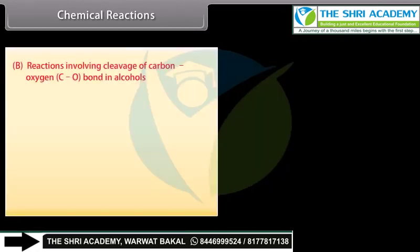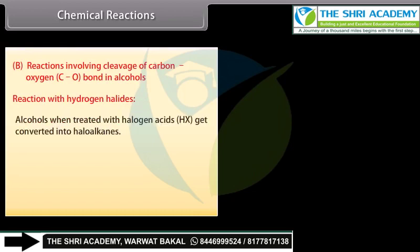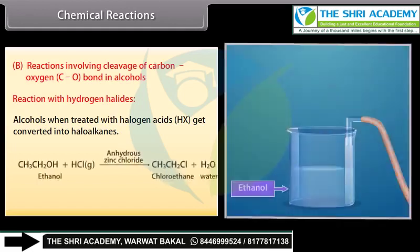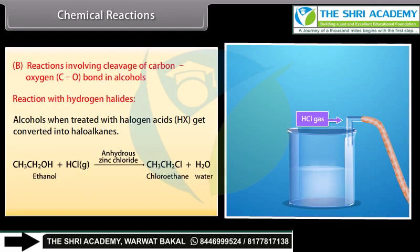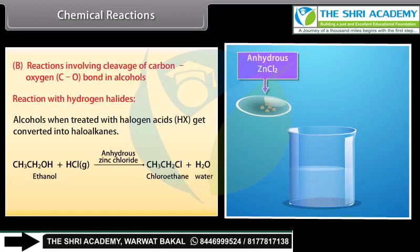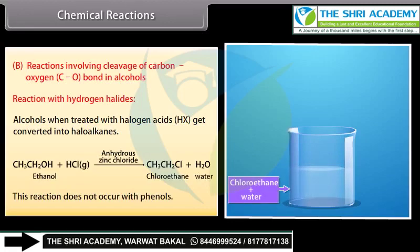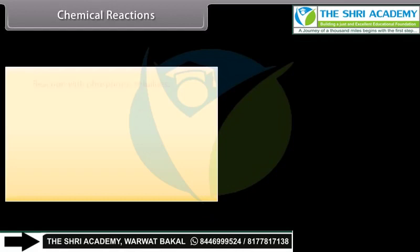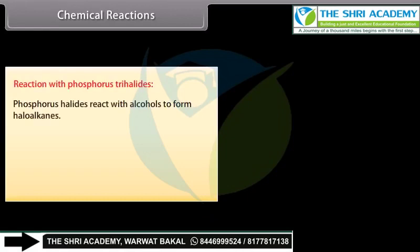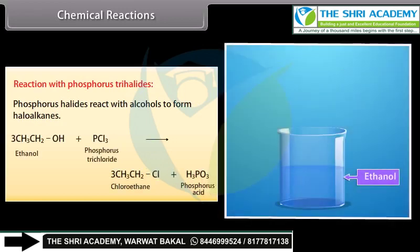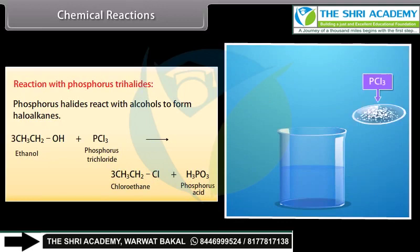Reactions involving cleavage of carbon-oxygen bond in alcohols: Reaction with hydrogen halides. Alcohols when treated with halogen acids get converted into haloalkanes. When hydrochloric acid gas is passed through ethanol in the presence of anhydrous zinc chloride, it forms chloroethane and water. This reaction does not occur with phenols. Phosphorus halides react with alcohols to form haloalkanes. Phosphorus trichloride reacts with ethanol to form chloroethane and phosphorus acid.